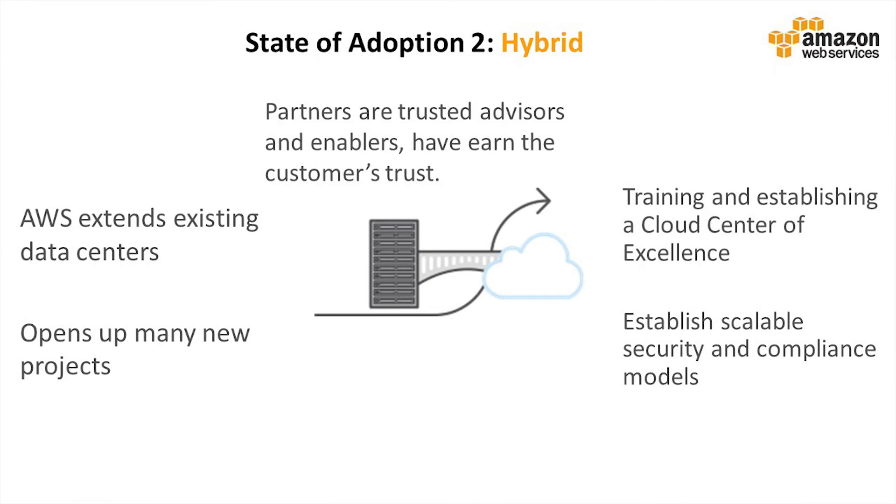If your relationship at this point was primarily with individual business units, this is when you'll likely need to start working with central IT. You're going to need to help central IT understand how they can achieve the security, governance, and control that they're used to now in the cloud.